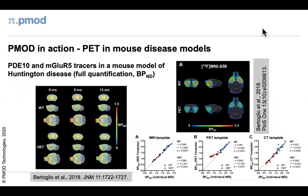In this work from the Molecular Imaging Centre at the University of Antwerp in Belgium, several tracers were used in a mouse model of Huntington's disease. PMOD was used to analyse dynamic PET data and fully quantify receptor binding, using brain atlas and image registration tools, with careful validation to get the best statistical power from their studies.